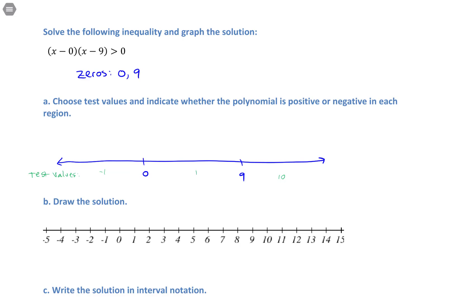And all I want to know is, is the polynomial larger than zero or smaller than zero on each interval? So I just plug this value into the polynomial. An easier form, instead of saying x minus zero, would just be x times x minus nine.